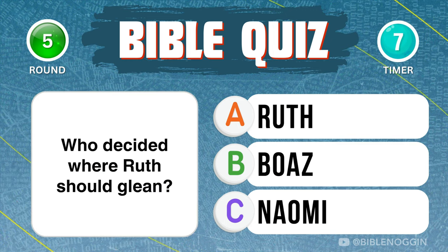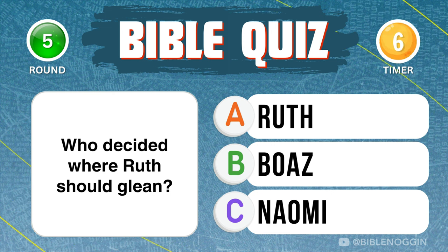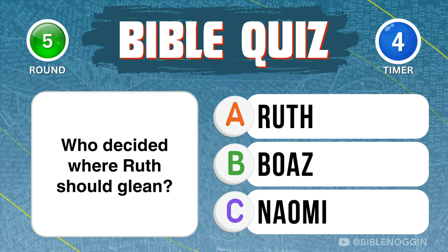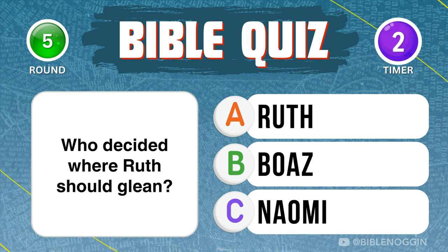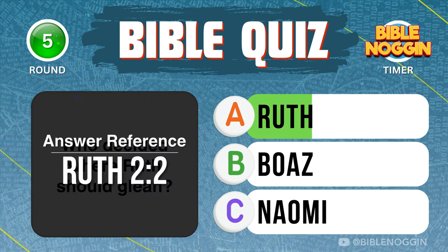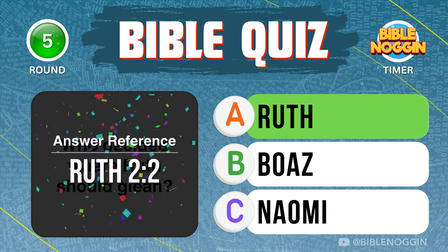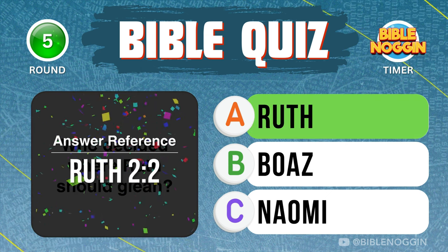Question 5: Who decided where Ruth should glean? Ruth — found in Ruth chapter 2, verse 2.